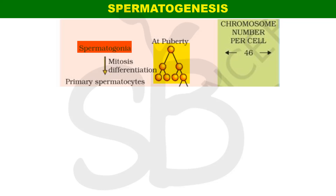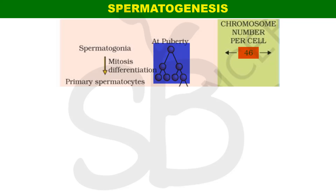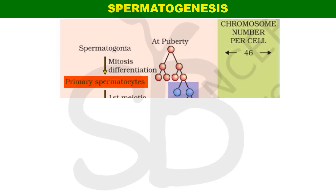The spermatogonia continuously multiply and divide mitotically. This is the reduction division process starting from the spermatogonia cells. The primary spermatocytes are formed from spermatogonia cells. This involves both meiosis and mitosis — the equational division — leading to a haploid condition.